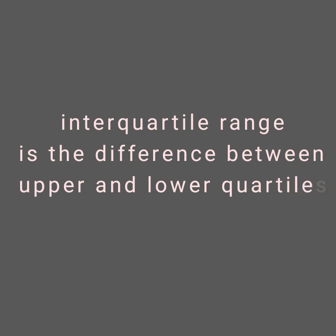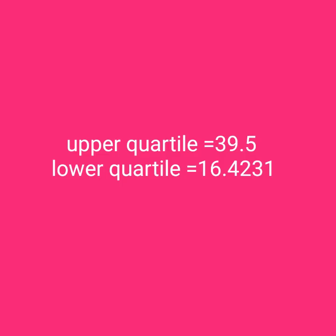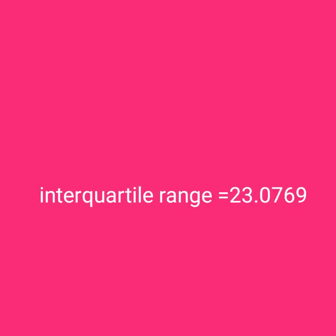For the interquartile range: the interquartile range is the difference between the upper and lower quartiles. Therefore, interquartile range = Q3 − Q1 = 39.5 − 16.4231.